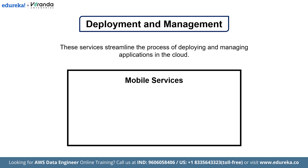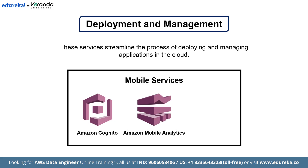Next, we have Mobile Services designed to enhance mobile application development and user engagement. First on the list is Amazon Cognito. Amazon Cognito provides authentication, authorization and user management for web and mobile apps. Your users can sign in directly with a username and password or through a third party like Facebook, Amazon or Google. Next, we have Amazon Mobile Analytics. Amazon Mobile Analytics helps you collect, visualize and understand app usage data at scale. It provides insights into how users engage with your app, enabling data-driven decisions.